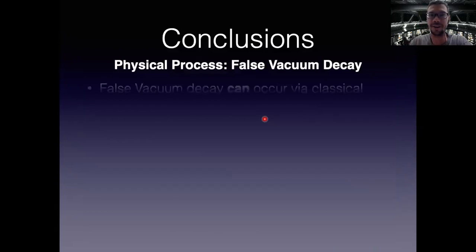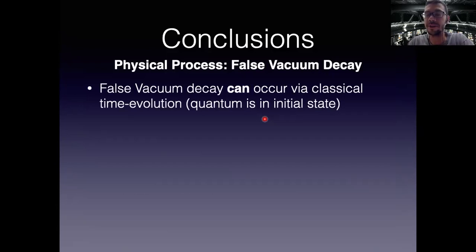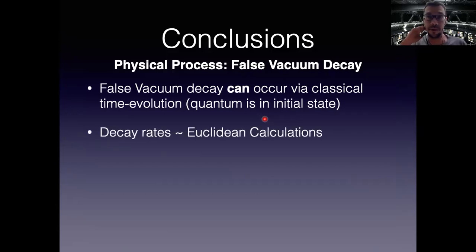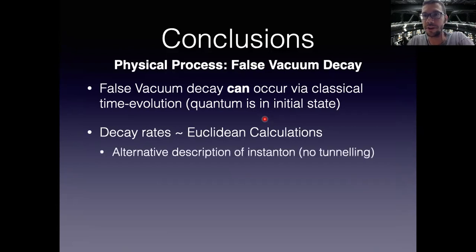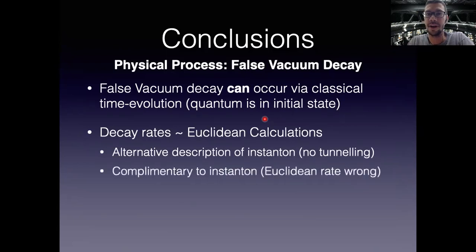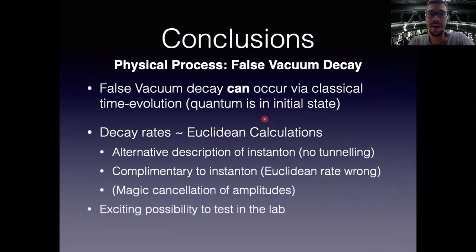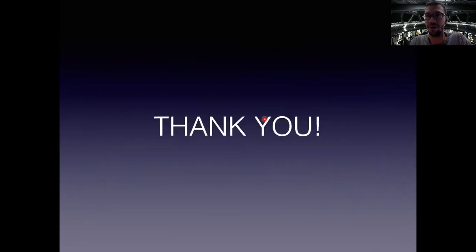In conclusion: quantum false vacuum decay can occur via purely classical time evolution with quantum mechanics encoded in the initial state, as opposed to being a tunneling process with no classical dynamical description. The bubbles formed appear to have the same properties as instanton bubbles, and the decay rates match Euclidean calculations — suggesting this is either an alternative description of tunneling, a complementary decay channel, or perhaps some magical cancellation of amplitudes. There is an exciting possibility to test this in the laboratory. Thank you — if you're interested, please talk to me in the discussion sessions.